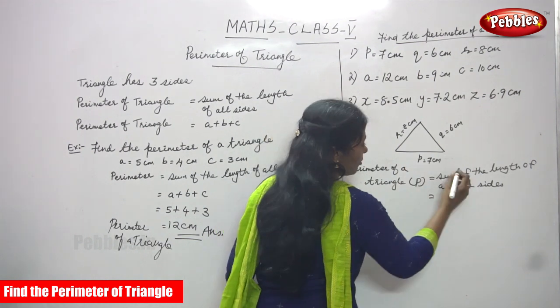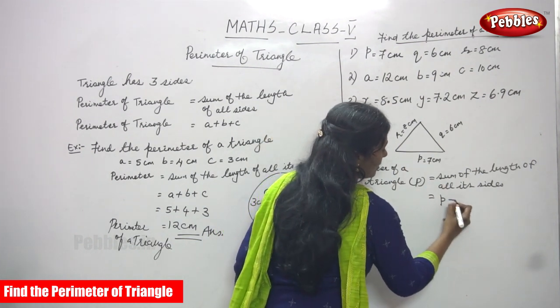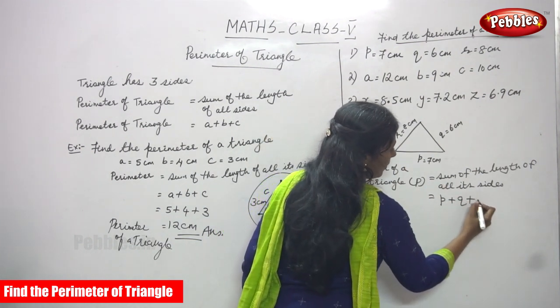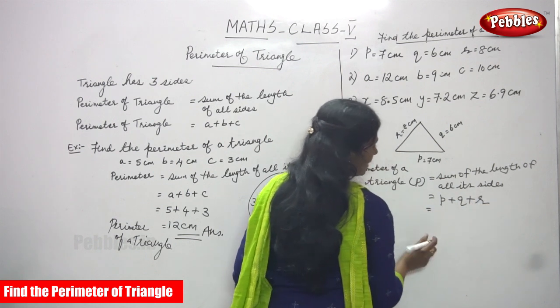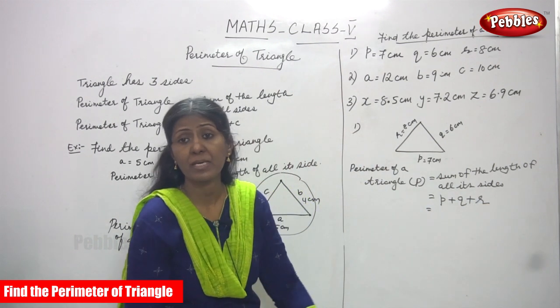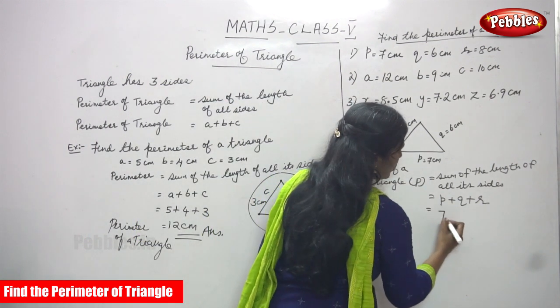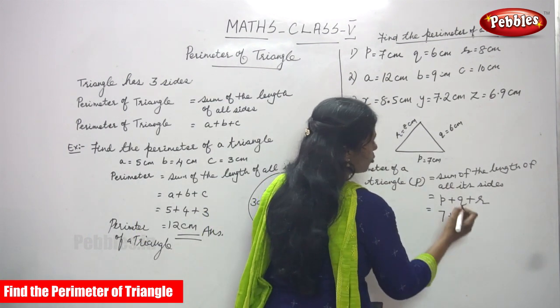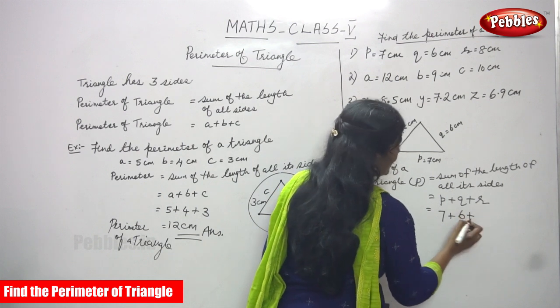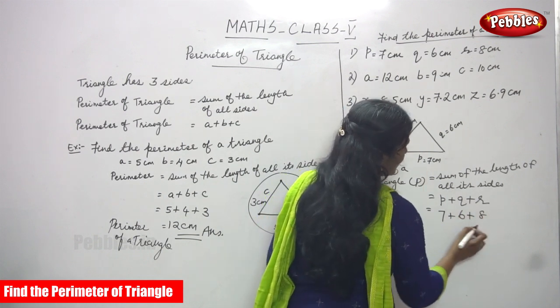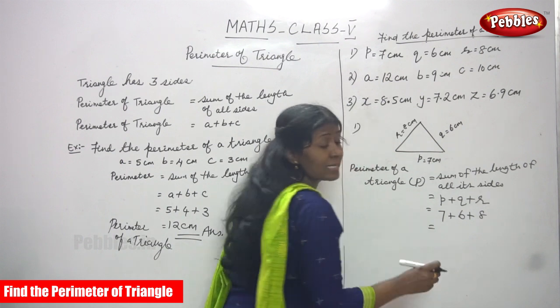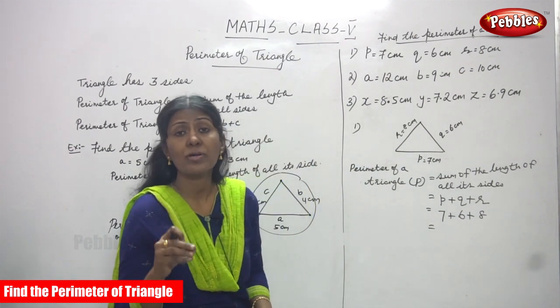So here, sum of the length means P is a length plus Q is a length plus R is a length. After that we have to substitute the value of P, Q, and R. What is the value of P? P is equal to 7, 7 centimeters, and Q is equal to 6 centimeters, plus R is equal to 8 centimeters. In that place, no need to write centimeter. Just substitute only values.